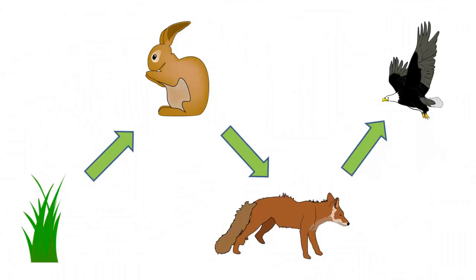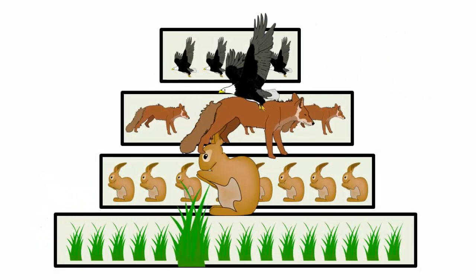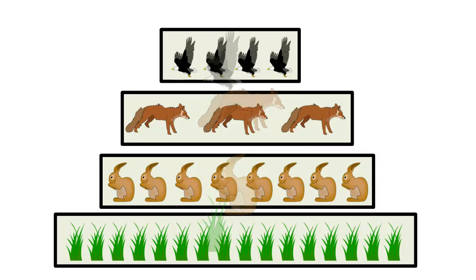A trophic level is a step in a food chain of an ecosystem. The organisms in a food chain are classified into their trophic level depending on their feeding behaviour. The number of steps an organism is from the start of the food chain is a measure of its trophic level.